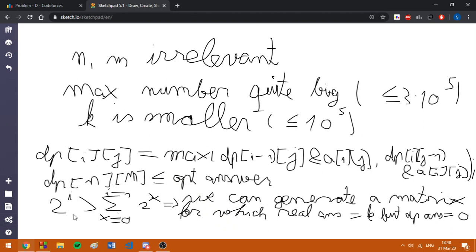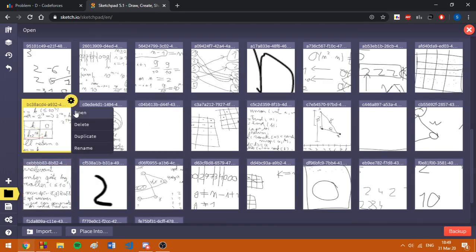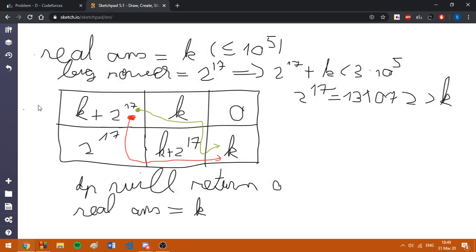We also know that 2^i is bigger than the sum of powers of 2 smaller than i, like 2^0, 2^1, up to 2^(i-1). So, we can generate a matrix for which the real answer is k, but the answer from DP is 0. Now, let's move on to the next table of contents where I'm going to present the actual solution.